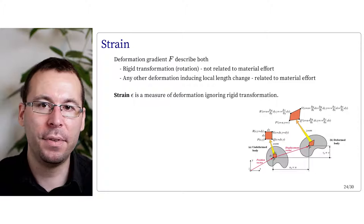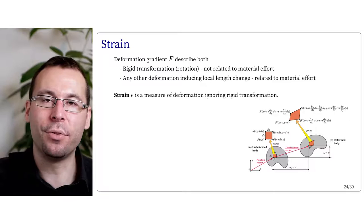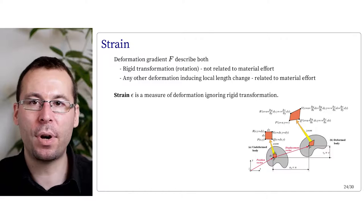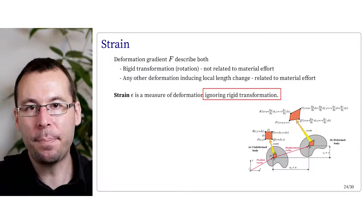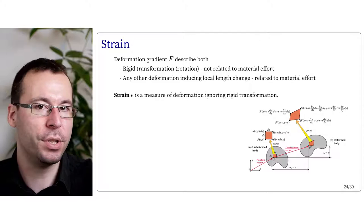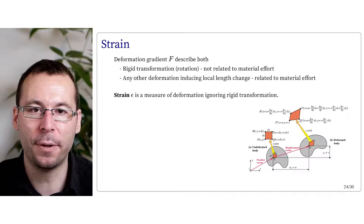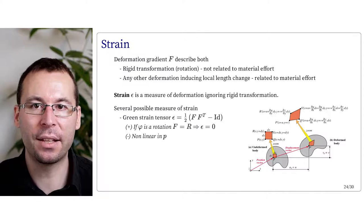The idea of strain is to have a quantitative measurement of shape deformation independently of the rigid transformation. We could think of the deformation gradient F, but F encodes both the rotation — not related to the effort — and any other local deformation inducing a change of length. There are several possible measurements of strain. The first is called the Green strain tensor: epsilon equals 0.5 times (F times F transpose minus identity). We can check that if phi is a rotation, epsilon equals 0 as expected, but the downside is it's not linear with respect to the coordinates of the shape P.